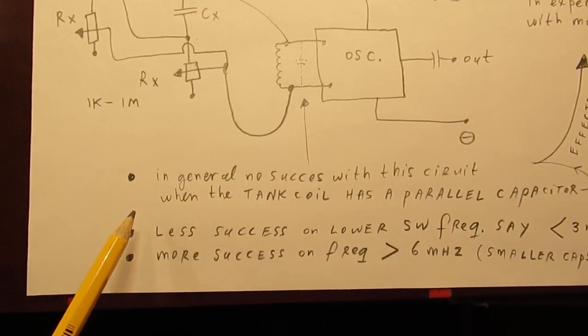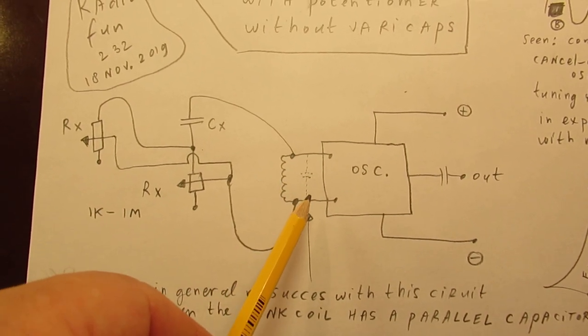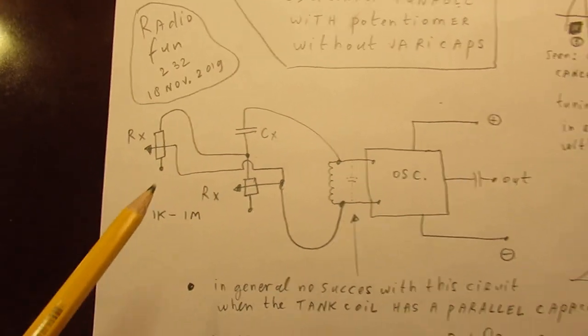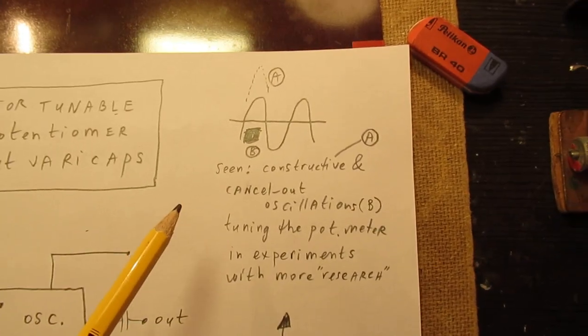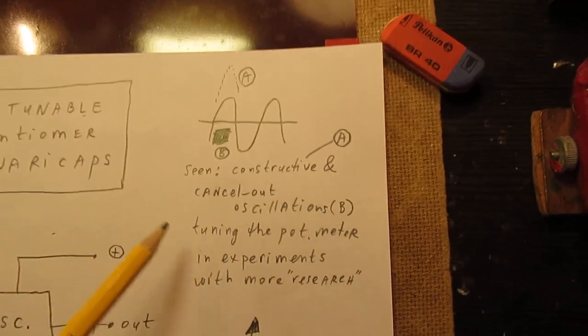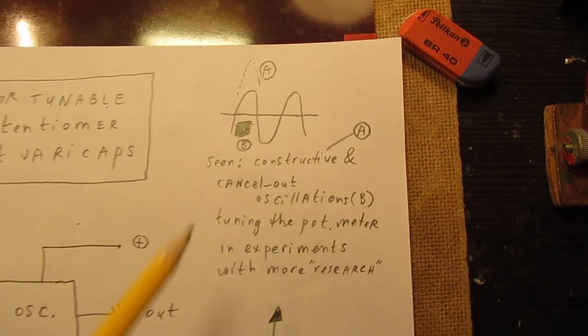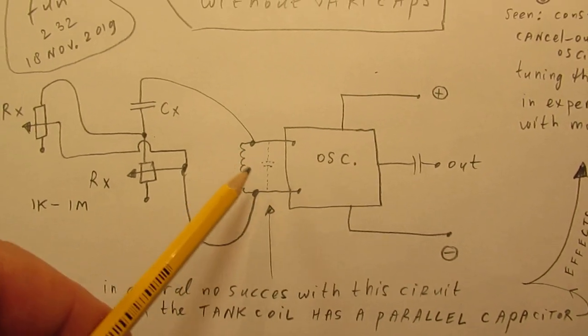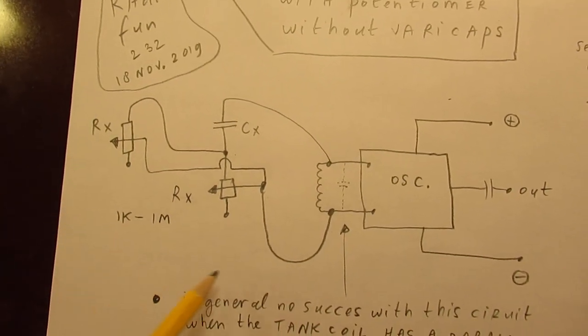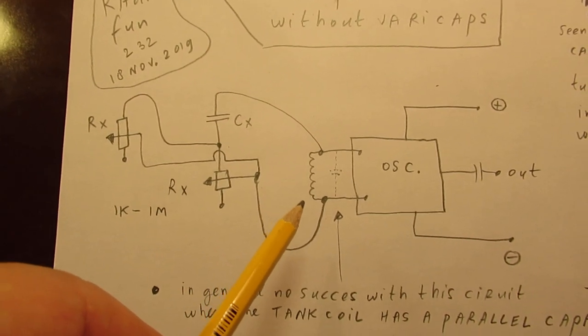There is no success with this circuit when that tank circuit has already a parallel capacitor. When you do this experiment, you will see almost no change in frequency and even destructive oscillations, and I mean that the oscillations cancel out each other. However, that's very strange. Here is a kind of frequency present when there is a fixed value capacitor. When you add this part of the circuit and change the resistance value, you will see that the oscillation stops on a certain moment.